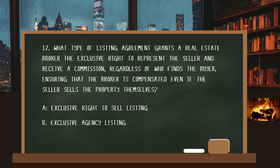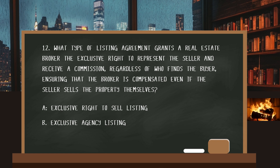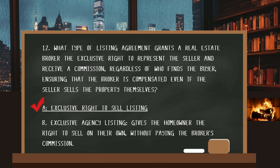Number twelve. What type of listing agreement grants a real estate broker the exclusive right to represent the seller and receive a commission regardless of who finds the buyer, ensuring that the broker is compensated even if the seller sells the property themselves? The answer is A: an exclusive right to sell listing. When we think about an exclusive agency listing, that's what gives the homeowner the right to sell on their own without paying the broker's commission.